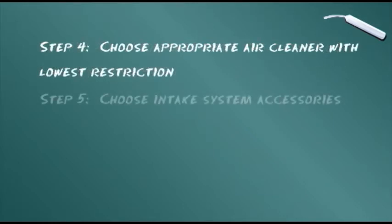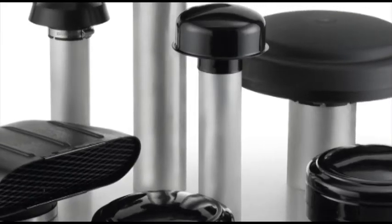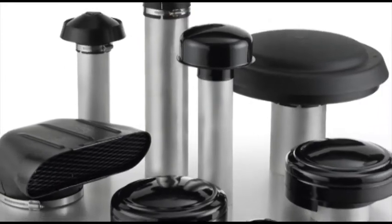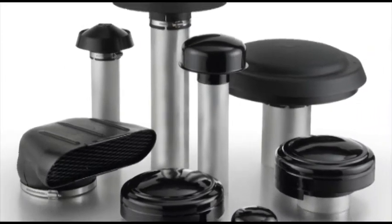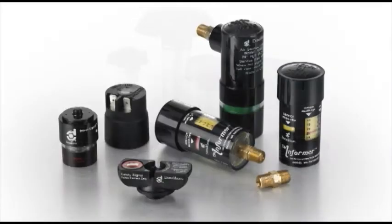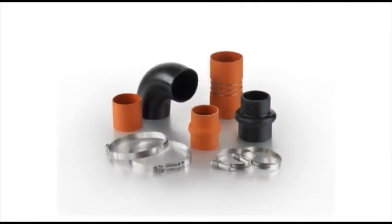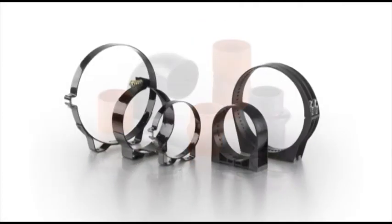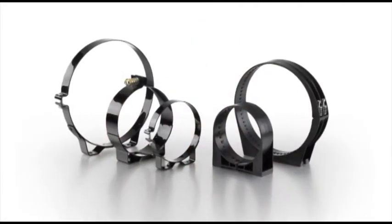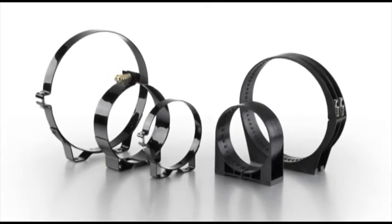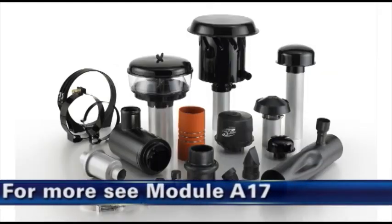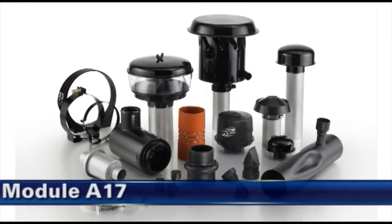Step 5 is to choose any necessary or advisable intake accessories. Depending on the vehicle and its work environment, inlet hoods, pre-cleaners, restriction indicators, rubber connectors, mounting bands, and clamps may be an important part of the overall intake system. See our accessories module A17 for more information.